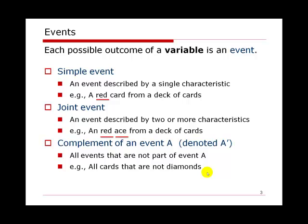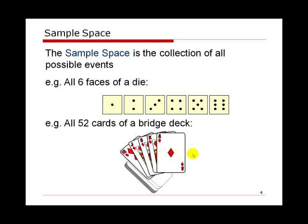Sample space is a collection of all possible events — we emphasize it should be the collection of all possible events. For example, if we roll a die, the die has six values: one, two, three, four, five, six. So all six outcomes will become the sample space of rolling a die. And if we look at a bridge deck, then all 52 cards will become the sample space.